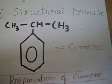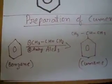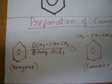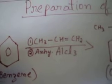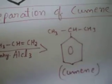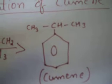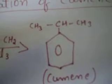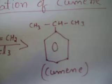Now let us look at how cumene is prepared. When benzene is treated with propene in the presence of anhydrous aluminium chloride catalyst, cumene is formed. Now let us look at how phenol is prepared from cumene.